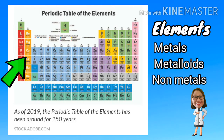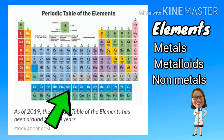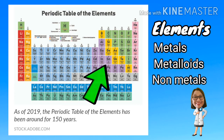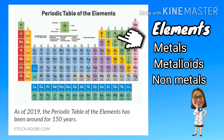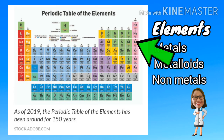Elements are classified into three. We have metals, metalloids, and non-metals. We also have the noble gases in the periodic table.